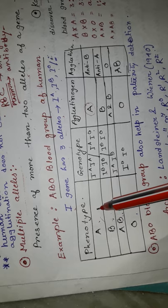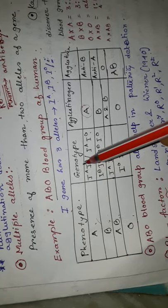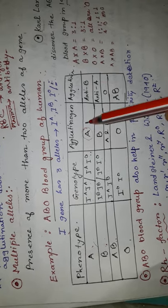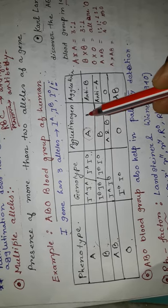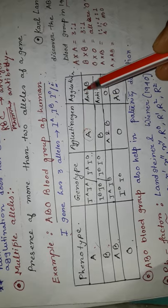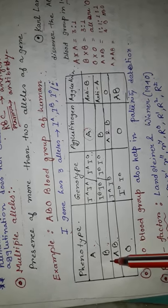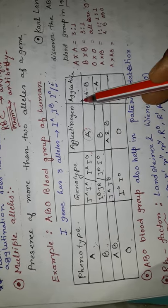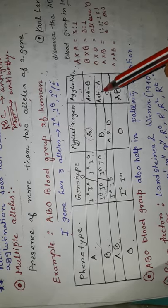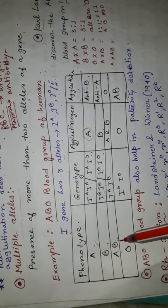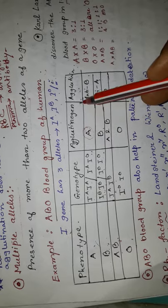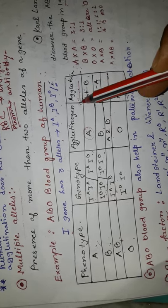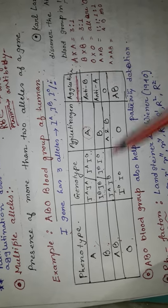The A blood group genotype is IAIA or IAI0, and they produce agglutinogen A on the surface of RBC, and antibody B in plasma. Phenotype B genotype is IBIB or IBI0, and the agglutinogen is B, and agglutinin is anti-A. In case of phenotype AB, the genotype is IAIB, and agglutinogen is A and B, while agglutinin is zero — no agglutinin is produced. That is, agglutinin is antibody, and this is not produced in case of AB phenotype.